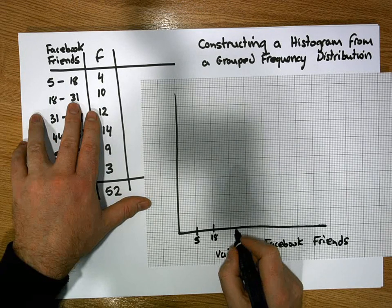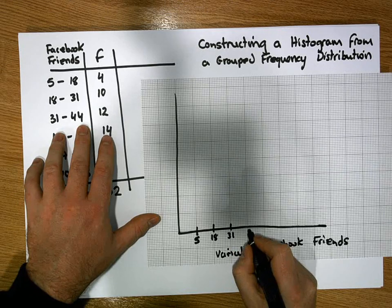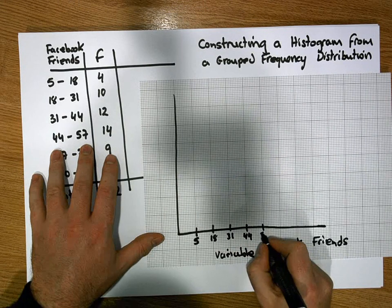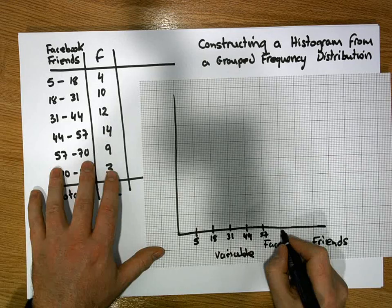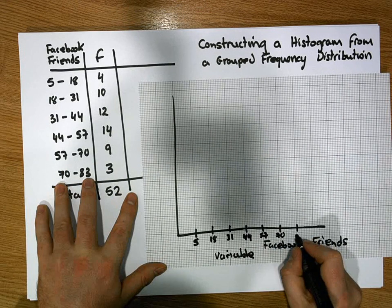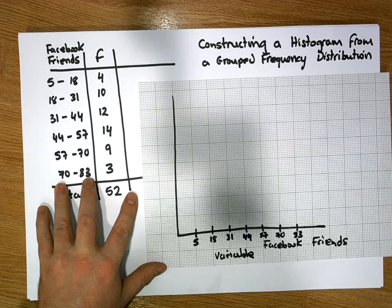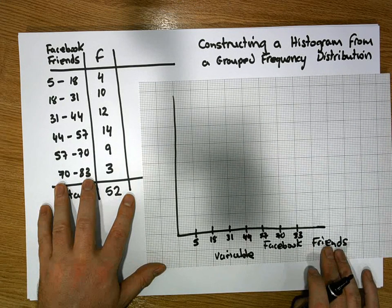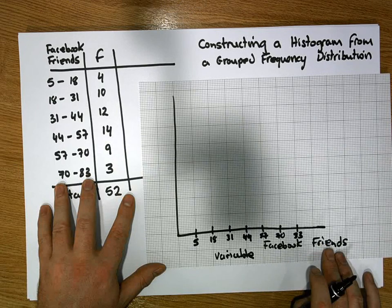18 then goes to 31. 31 goes to 44. 44 goes to 57. 57 goes to 70. And 70 goes to 83. So this particular axis here now represents the variable Facebook friends, or how many Facebook friends an individual respondent has.